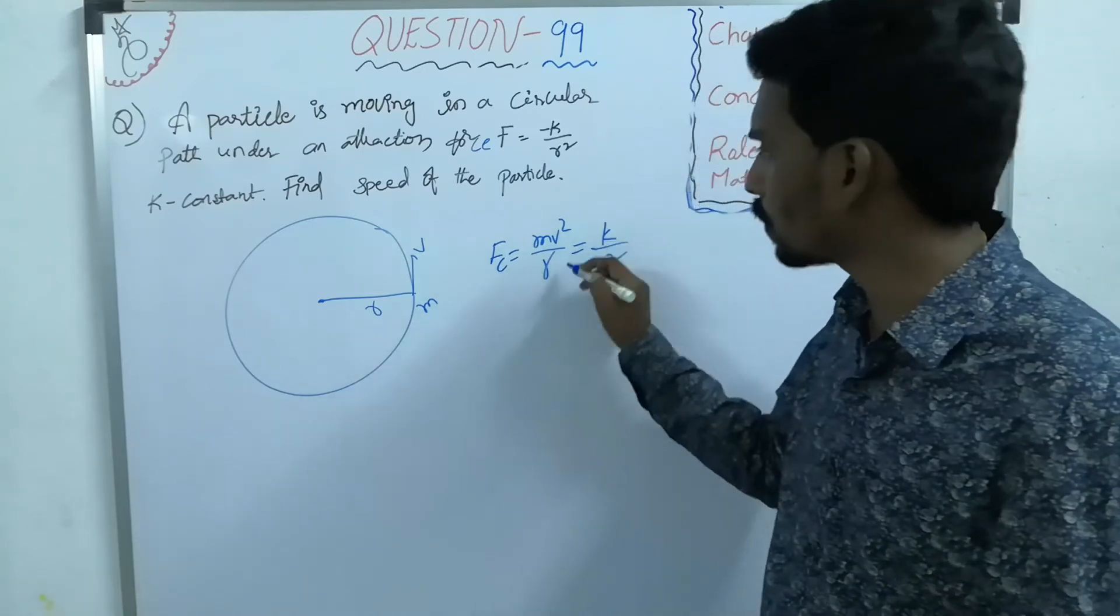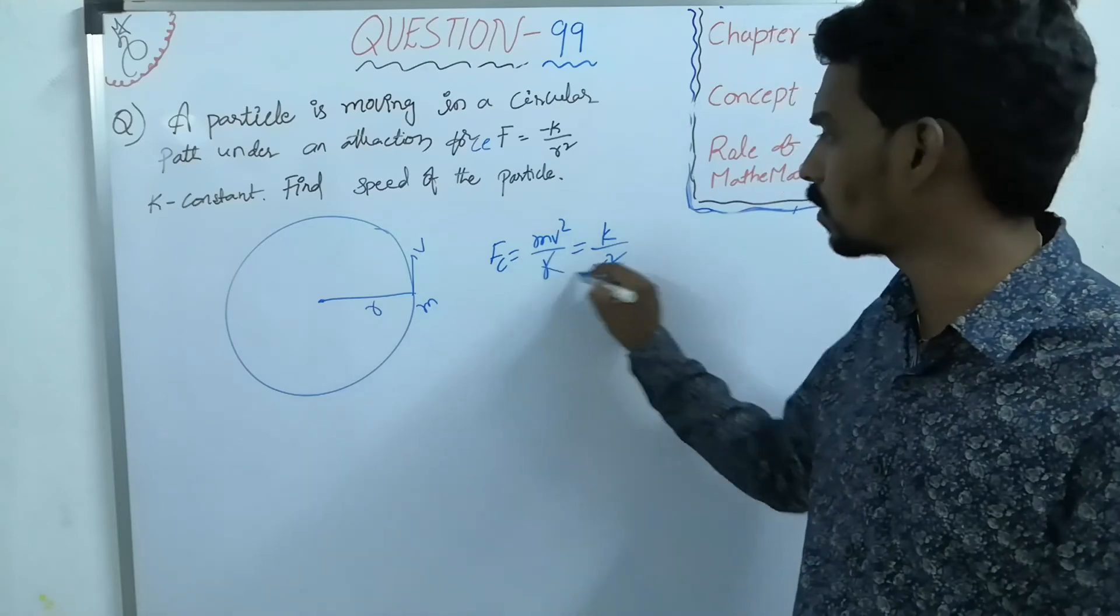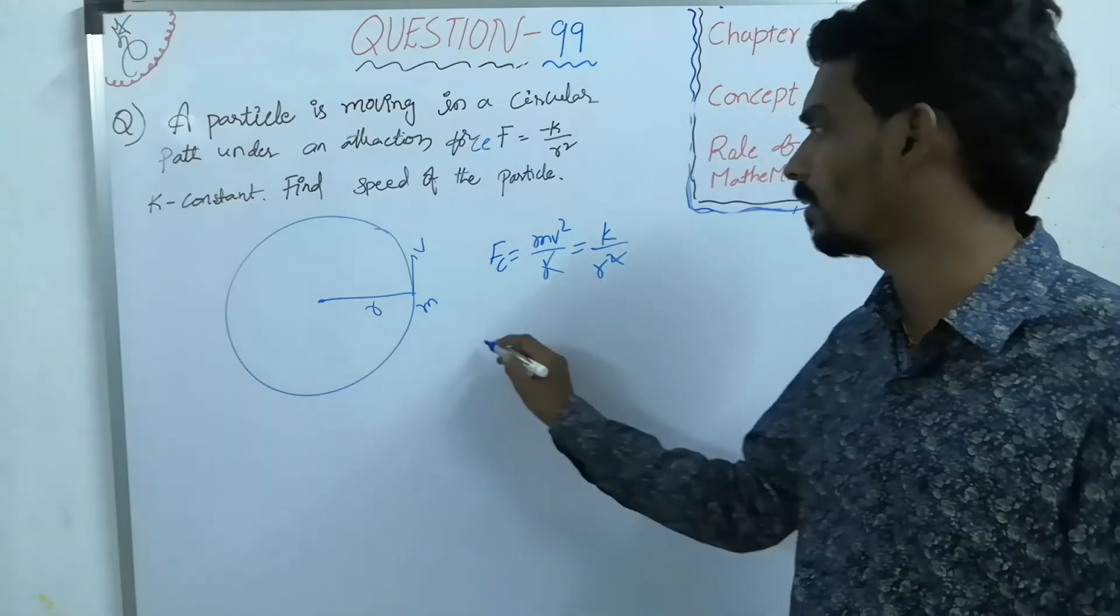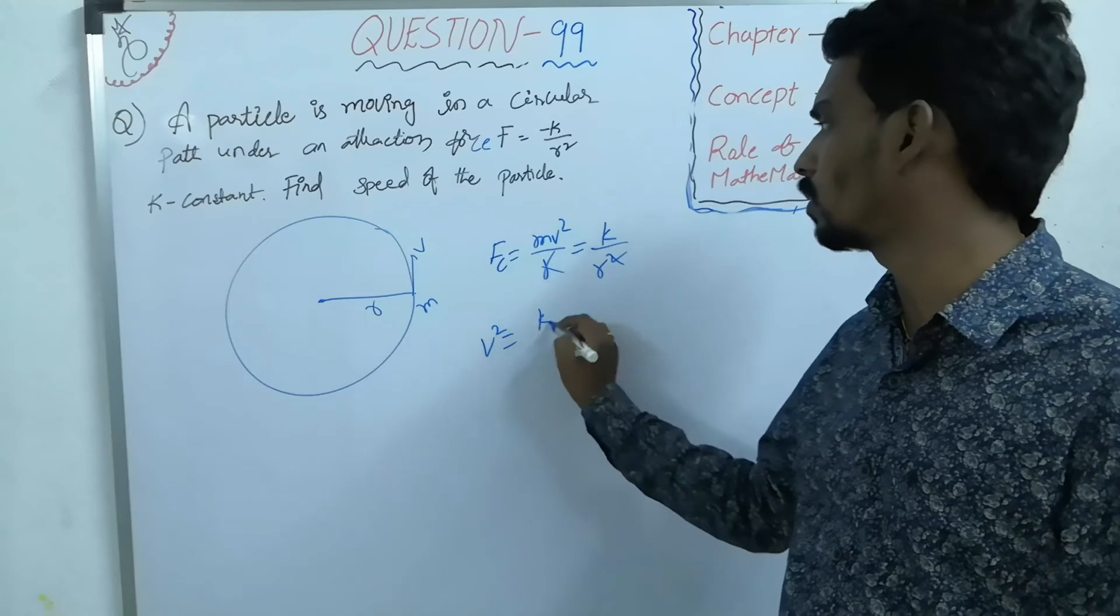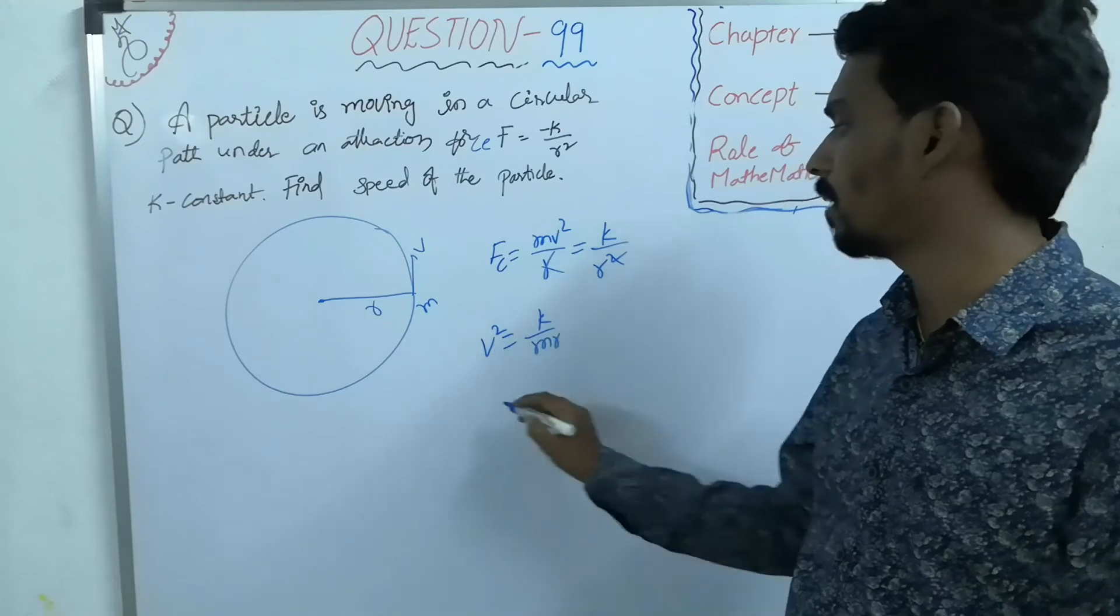This force is providing the required centripetal force. The r's get cancelled, then v square equals k by mr.